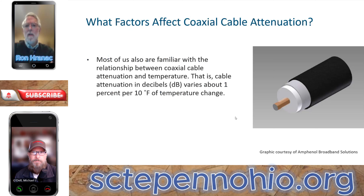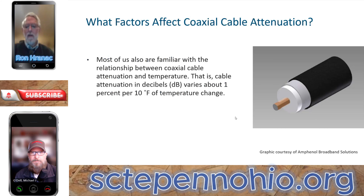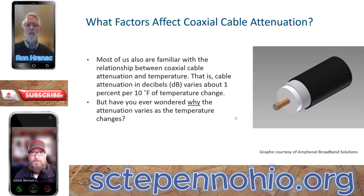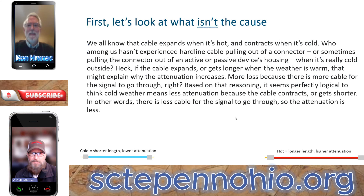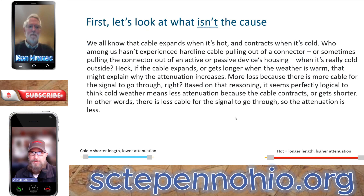Another well-understood property is what happens over temperature. As the temperature goes up, the attenuation changes; as the temperature goes down, the attenuation changes. The variation is about 1% per 10 degree Fahrenheit temperature change. The question, though, is have you ever wondered why the attenuation changes over temperature? We're going to talk about that. The first bullet point is really the core behind the myth, and most legends do have some kernel of truth in them — there is factually an impact of temperature on attenuation.